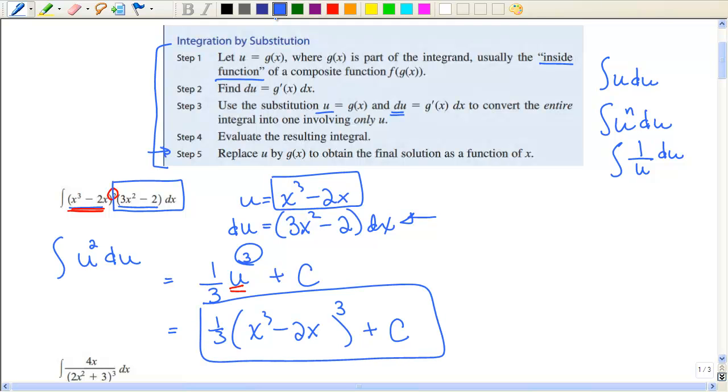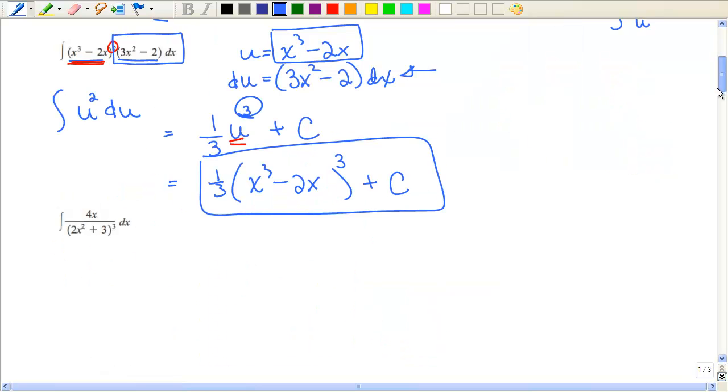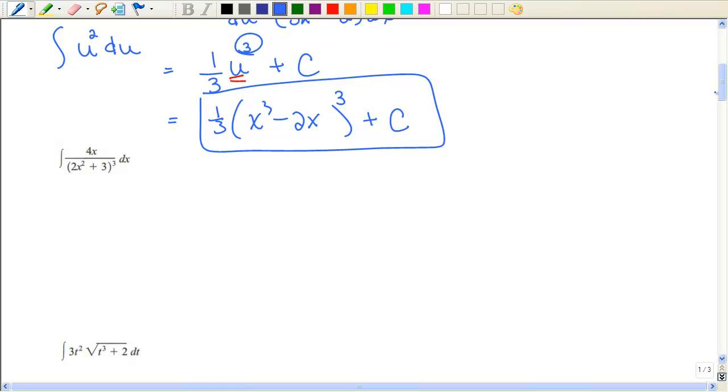This takes a little bit of practice to kind of maybe recognize what you want u to equal to. Let's look at this next one. Well certainly the denominator looks more complicated than the numerator. And remember, anything you have to a power, you usually want to let u equal to the thing without the power. Let me restate that. Take that with the power, but when you're letting u take away the power. So let's let u be this. Then du is 4x dx. Now let's see if we can match.